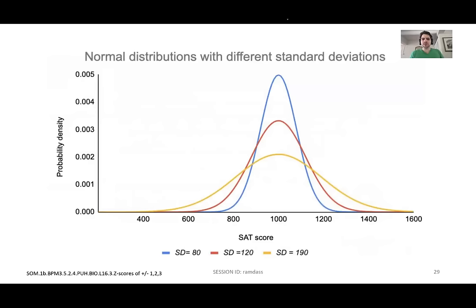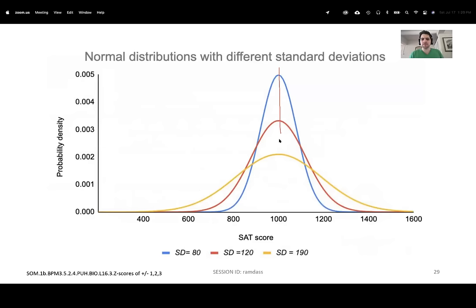We can still appreciate that mean, median, and mode are all the same. But what's different is the standard deviation. If we look at the yellow line, standard deviations are wider versus the blue line, which is more centralized. A lower standard deviation means values fell in a better, more clustered range.